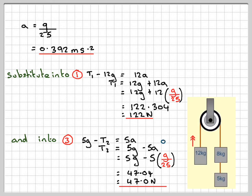If we just put that all onto one force diagram, so we've got an acceleration going upwards here and acceleration going downwards here. We've got a tension here of 47.0 Newtons to 3 significant figures. And the tension here is 122 Newtons.